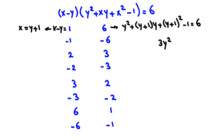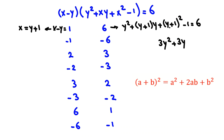Expanding: y squared plus y squared plus y plus y squared plus 2y plus 1 minus 1 gives 3y squared plus 3y equals 6. Dividing by 3: y squared plus y minus 2 equals 0.